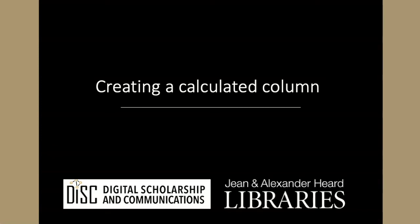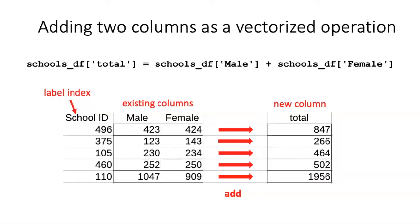Now that we've seen how we can access different parts of a data frame, let's try doing some simple calculations. One kind of calculation we might want to do would be to create a new column based on calculations on existing columns.